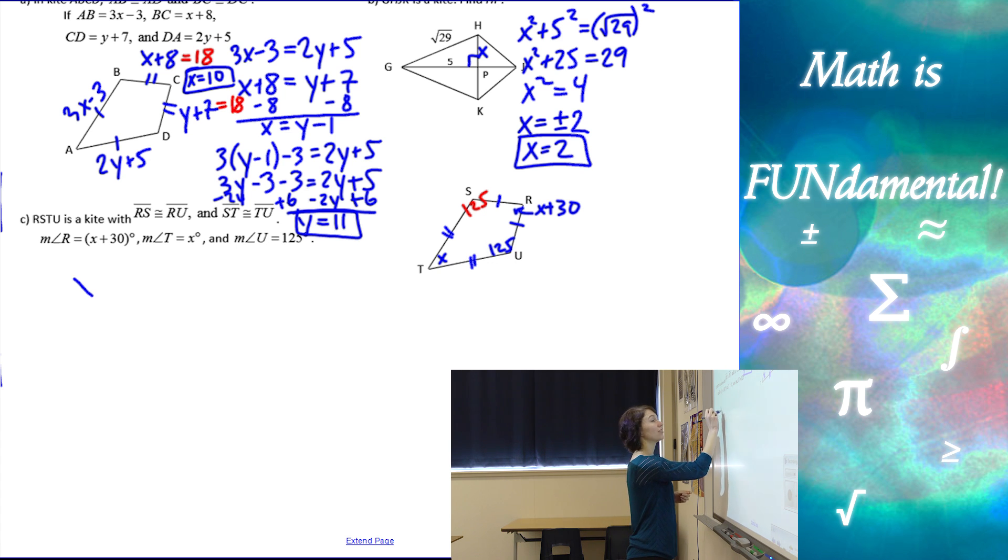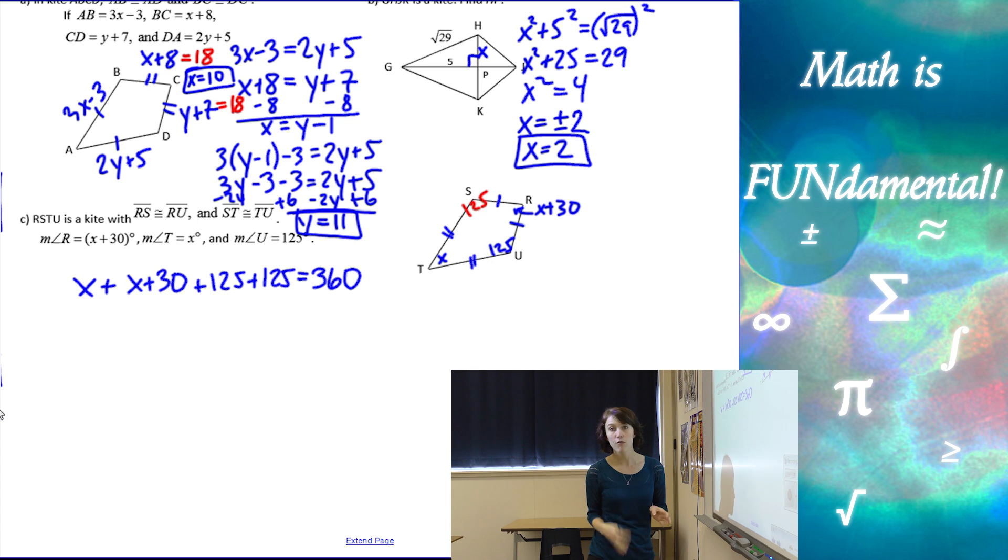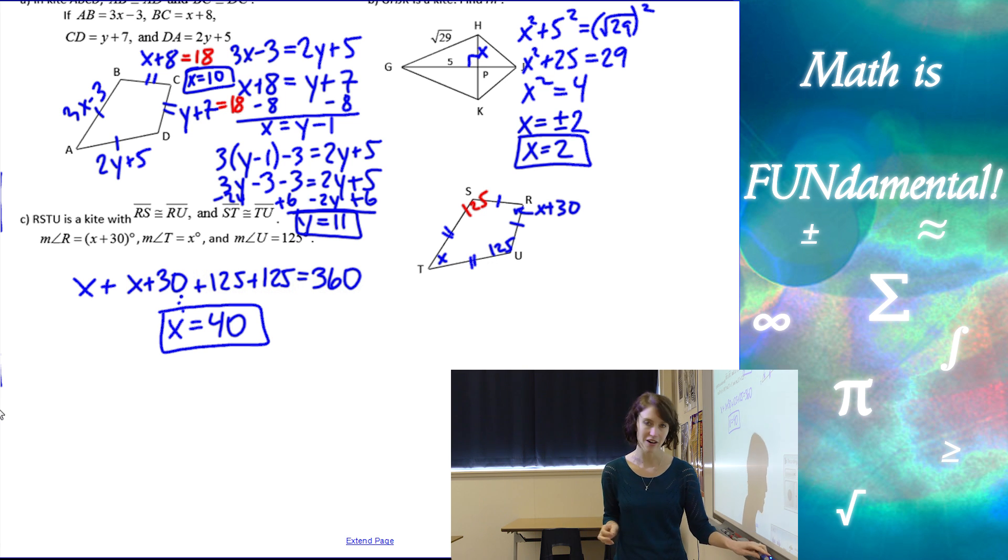And because a kite is a quadrilateral, then all the interior angles have to add up to 360 degrees. So, I can set up my equation by adding all four angles together to be 360 degrees, and doing a little bit of math, saving us some time, we're going to get x equals 40. And then it says, oh, and that's it. We don't actually have to do anything else. Sometimes we have to plug it back in to find the measures of those angles, but in this case, it didn't ask us to. So, there we go. We have our x value.